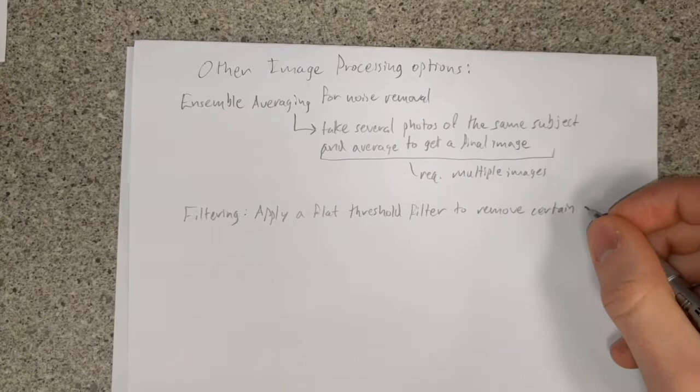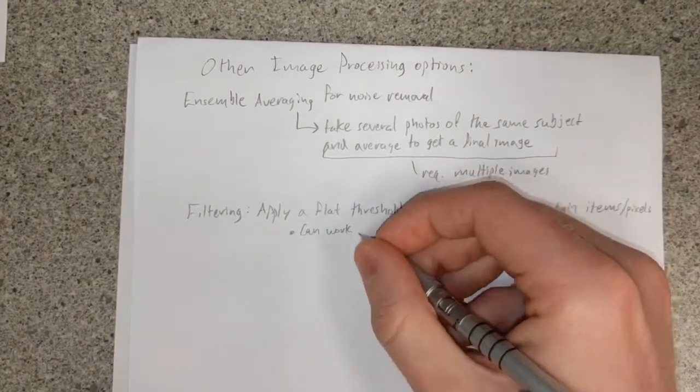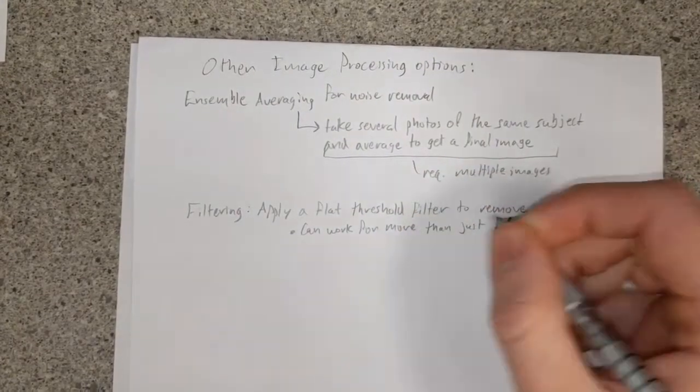We can also choose to filter out certain noisy components or threshold certain numerical values for image colors or intensity. This, too, requires some level of a priori knowledge and is prone to user error.